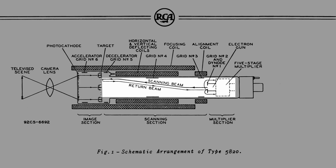The opposite side of the glass is scanned by a low-velocity electron beam produced by the electron gun in the scanning section. This gun contains a thermionic cathode, a control grid (grid number one), and an accelerating grid (grid number two).